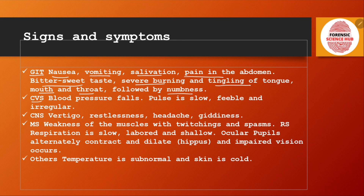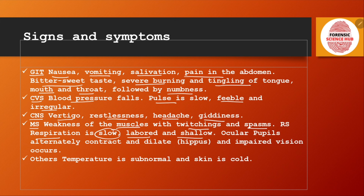Cardiovascular symptoms include decreased blood pressure and a pulse that is feeble and irregular. Central nervous system symptoms include vertigo, restlessness, headache, and giddiness. The muscular system shows weakness with twitchings and spasm. The respiratory system becomes slow, labored, and shallow. The ocular pupils alternatively contract and dilate, and impaired vision can be seen. Temperature is subnormal and the skin is cold.